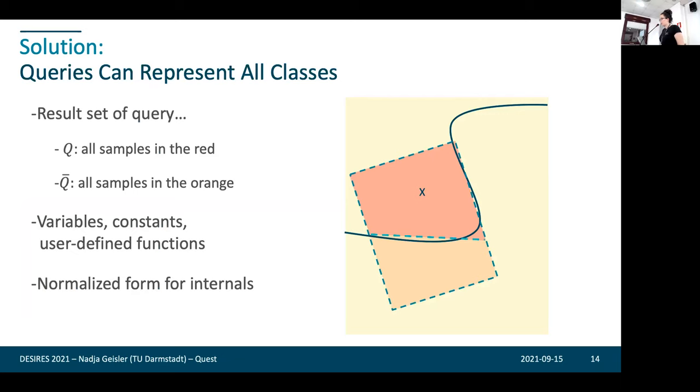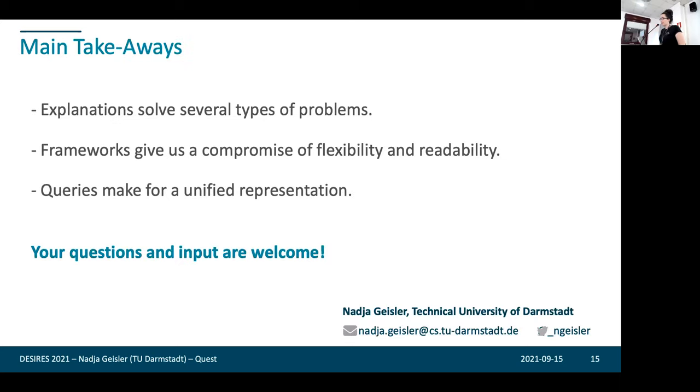The system is only usable if the resulting explanations have something in common. We need some way of comparing these explanations, comparing how valuable they are, and we need a common output format. What we suggest is doing this query-based. Basically every explanation has their boundaries, has the decision surface, but is represented by the query queue, which covers all the samples of class A within the boundaries. These queries can use variables, values for the different attributes, they can use constants, they can use user-defined functions. And then we have the advantage that queries can be executed in databases. We can normalize them to something like a disjunctive normal form.